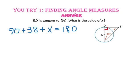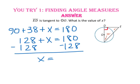Combining like terms, 90 plus 38 is 128, and we'll add that to X to get 180. Subtract 128 from both sides, and X equals 52.